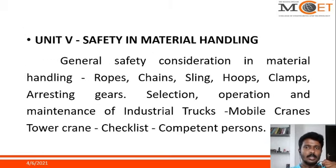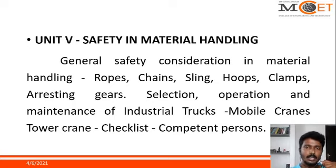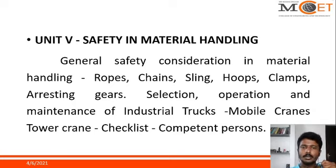Unit 5 covers how to safely handle materials, whether in construction or any field. What are the general safety considerations for material handling, and what is the role of ropes, chains, sling hoops, clamps, and arresting gears which are used in mobile cranes and tower cranes. What are the checklists to be followed for safety measures and the need for competent persons for handling safety measures.